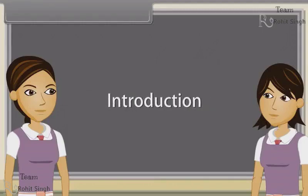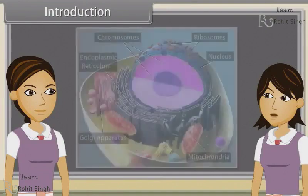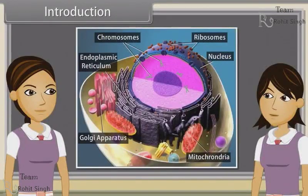Hey Ankita, we have discussed the structure of the endomembrane system, endoplasmic reticulum, Golgi apparatus, lysosomes, vacuoles, mitochondria, plastids and ribosomes.